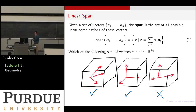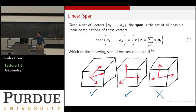Suppose you have a set of vectors A1 through AD — these are the feature vectors in the A matrix. I'm going to form a linear combination of all these feature vectors. Then I would define a set called the span of A1 through AD, which is the set that contains all the linear combinations of all these column vectors.